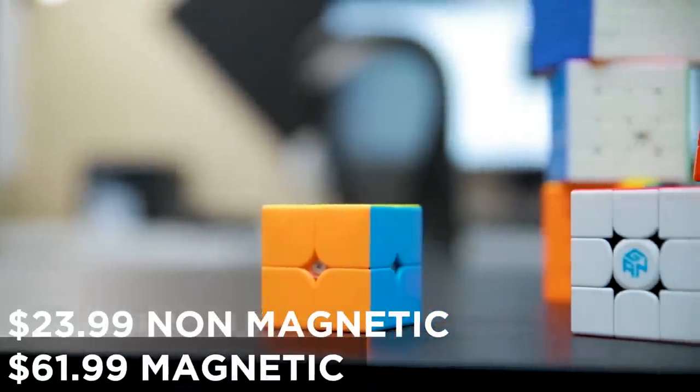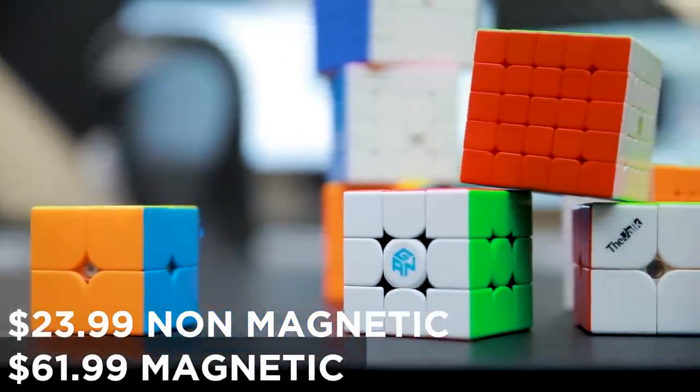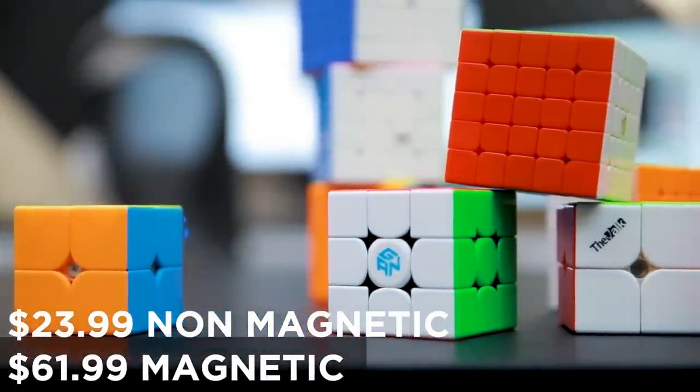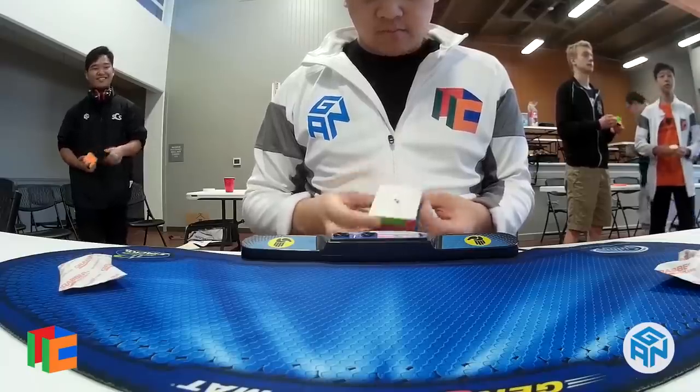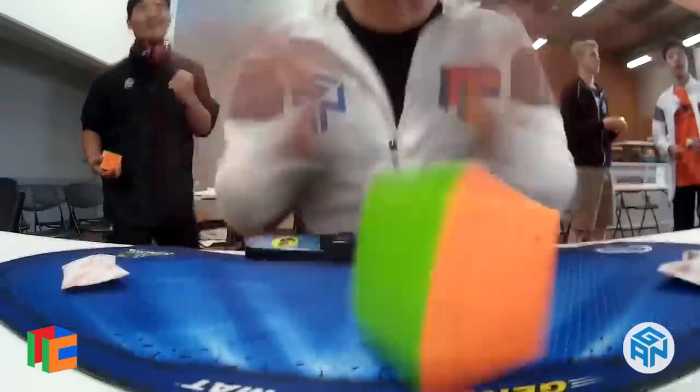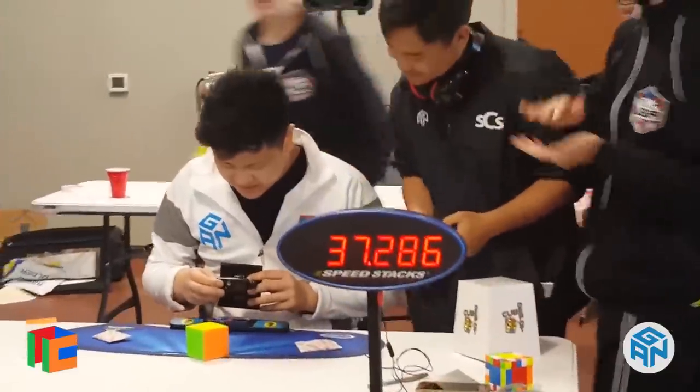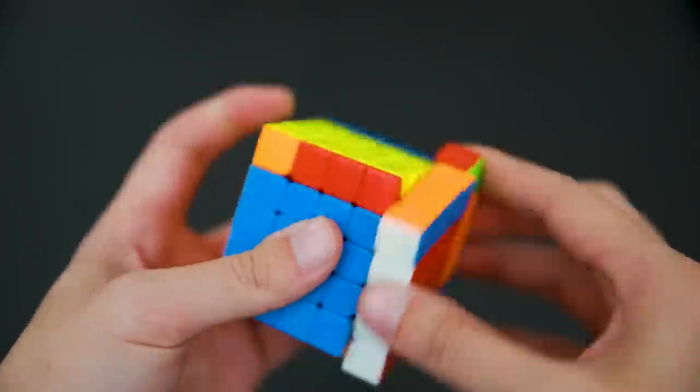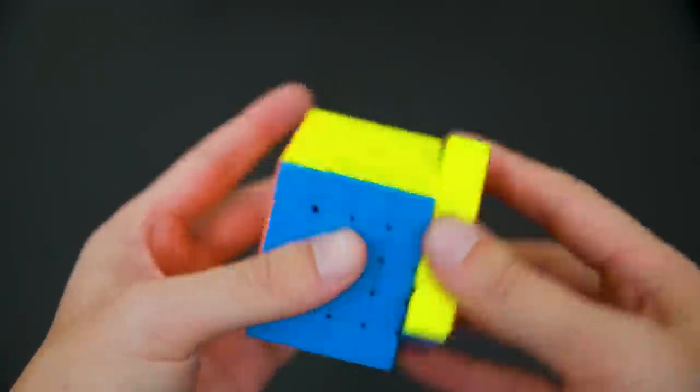Similar to the Wuque, the Qiyi Wushuang has been a dominant 5x5 for quite some time now. It has broken countless world records and has been the go-to choice for all types of solvers. The Qiyi Wushuang is famous for its smooth feel with super stable outers, traits that competitive solvers rely on to achieve world class times.